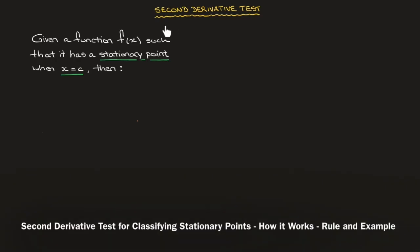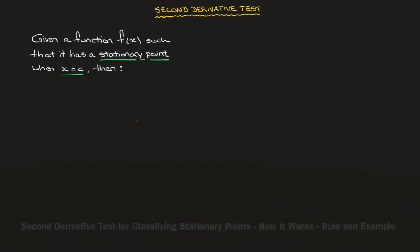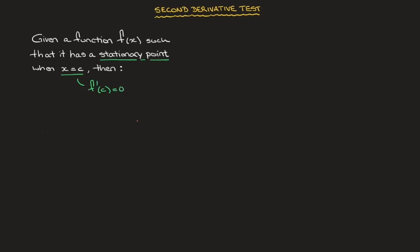Hi everyone. We now learn about the second derivative test for classifying stationary points. Suppose we're given a function f(x) such that it has a stationary point, or critical point, when x equals c. In other words, the first derivative f' is equal to 0 at c. The second derivative test states the following.